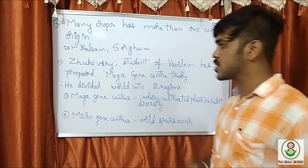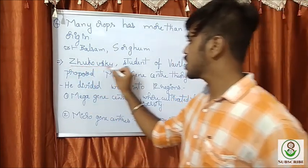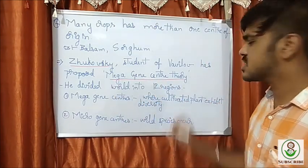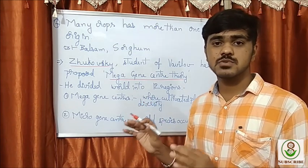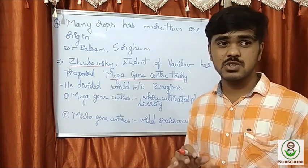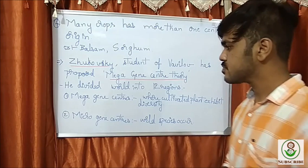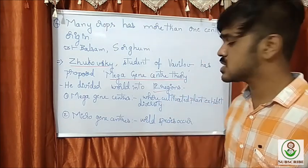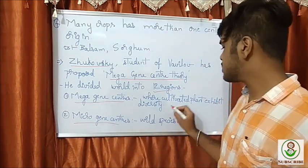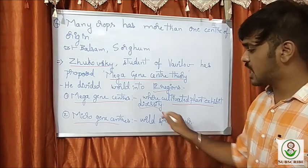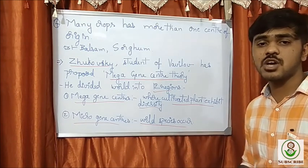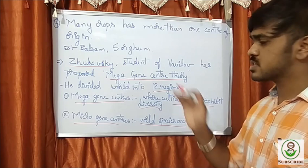Then came Vavilov's student Zhukovsky, who proposed the mega gene center theory to address the shortcomings of Vavilov's theory. He divided the world into 12 regions based on mega gene centers and micro gene centers. Mega gene centers are where cultivated plants exhibit diversity, while micro gene centers are where wild species exhibit diversity or occur.